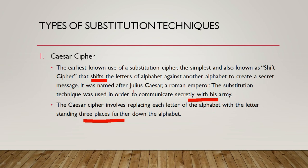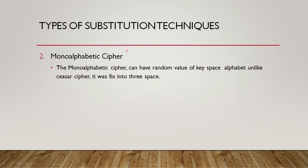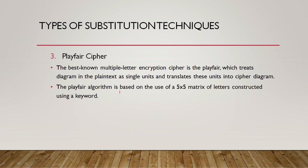Caesar cipher was named after Julius Caesar, a Roman emperor who used this substitution technique to communicate secretly with his army. It involves replacing each letter of the alphabet with the letter standing three places further down the alphabet. The second type is the monoalphabetic cipher, which has a random value of key space alphabet — unlike Caesar cipher which is fixed at three spaces. The third type is the Playfair cipher, the best known multiple-letter encryption cipher, which treats digrams in the plain text as single units and translates them into cipher digrams, based on a five-by-five matrix of letters constructed using a keyword.